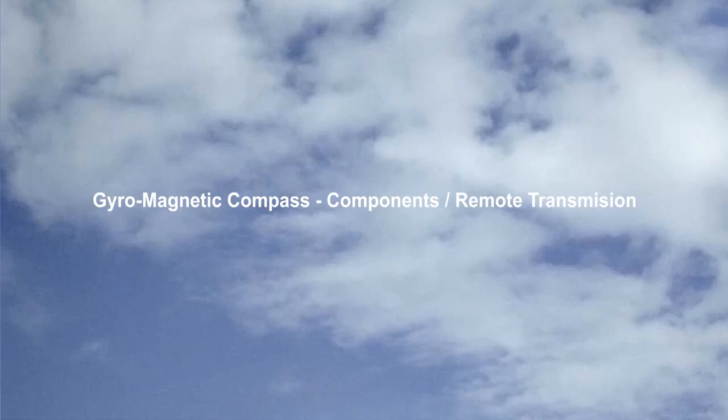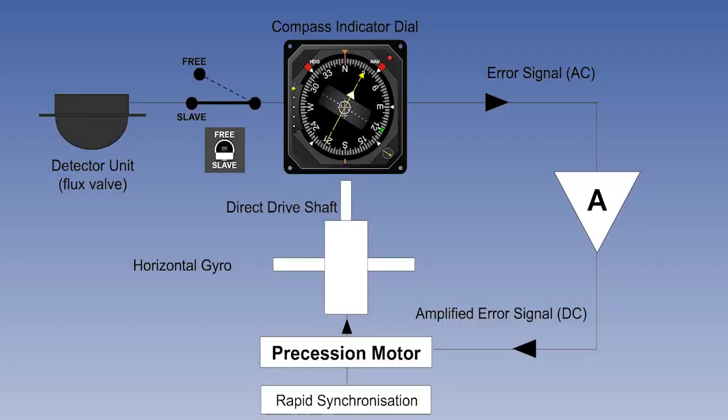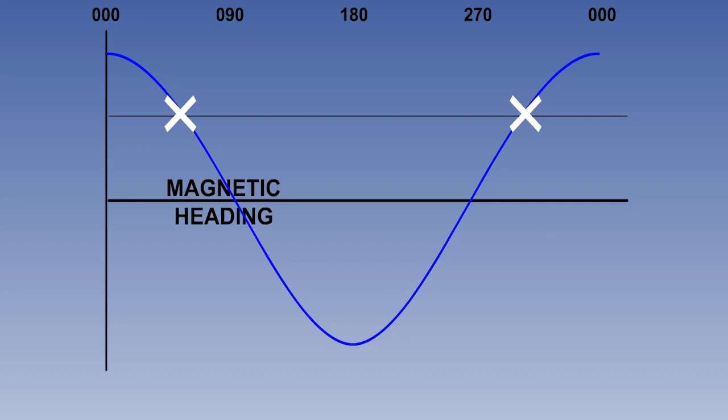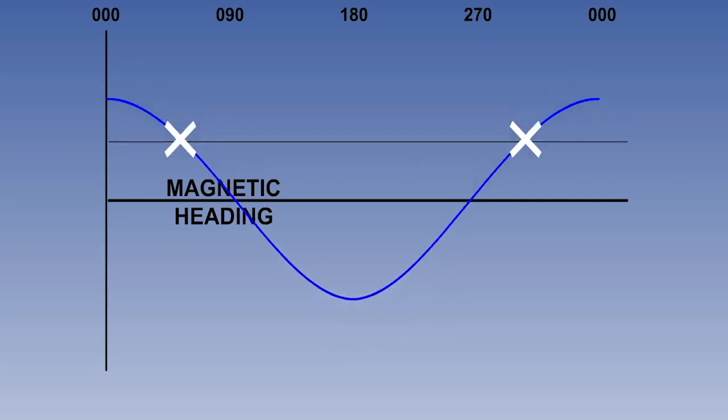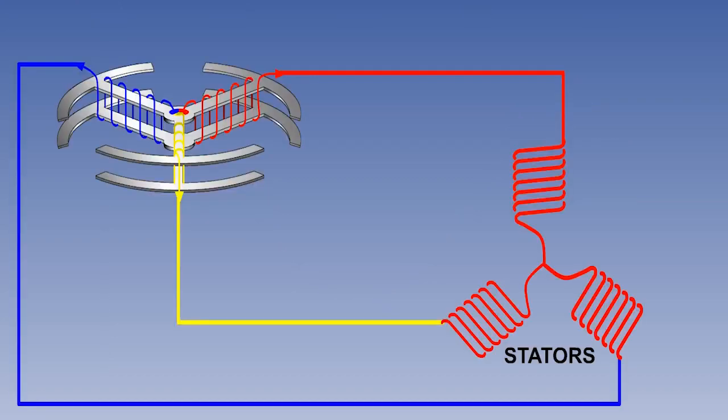This is the third of three lessons on the gyromagnetic compass. Previously, we have established the need for the gyromagnetic compass and showed the basic components which make up the system. We also showed how the detector unit, or flux valve, senses the Earth's magnetic field and reproduces it within the compass indicator. We are now going to examine some of the components more closely, and also add some new ones.